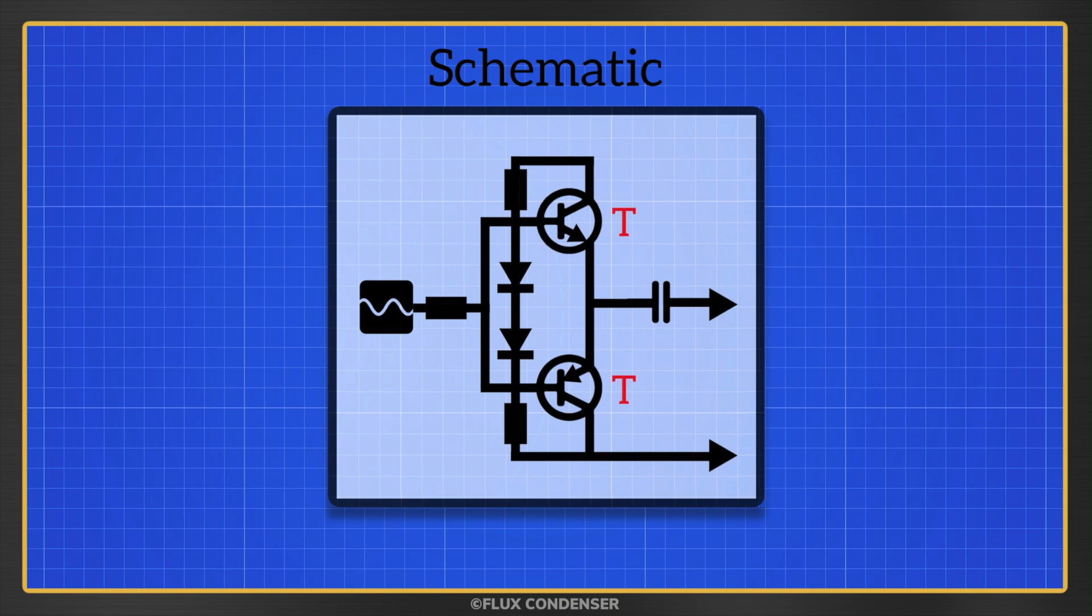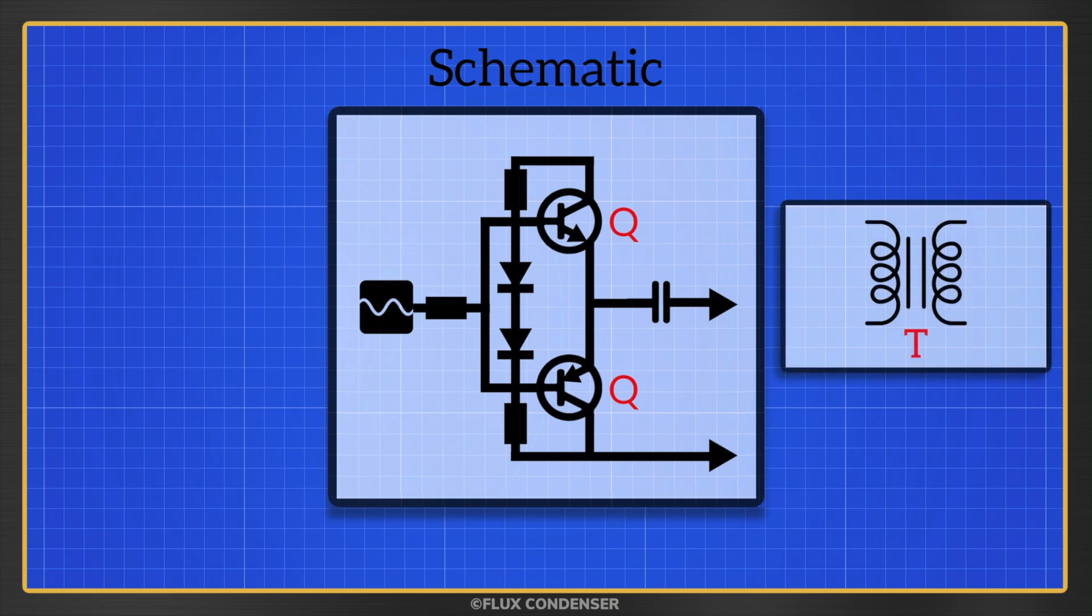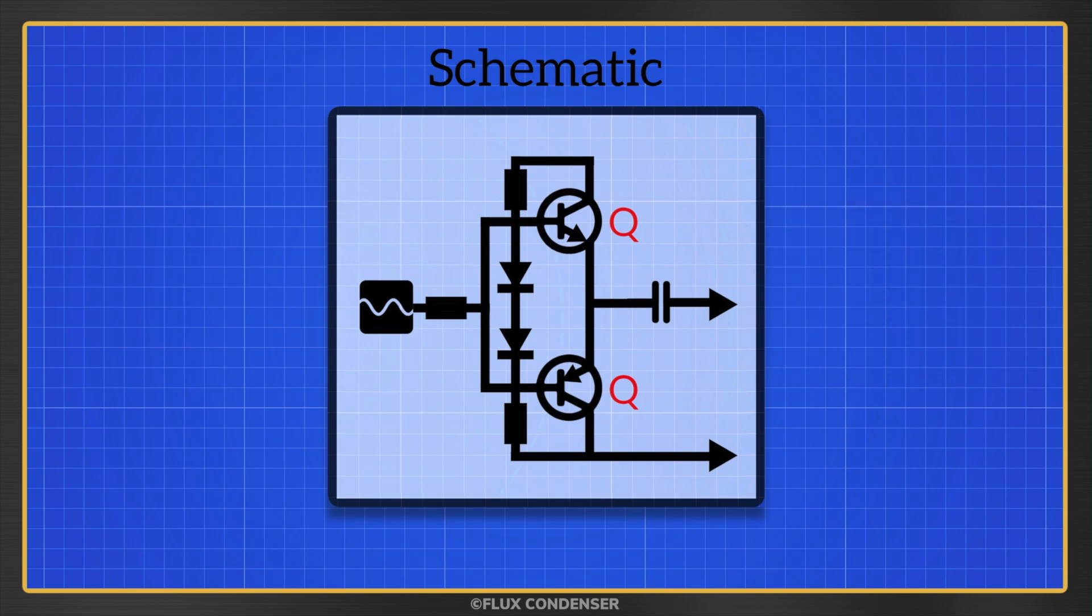Transistors, though, aren't represented by the letter T, but instead by a Q. Probably because by the time transistors were invented, the letter was already long taken by transformers. Why the letter Q, though? I actually have no idea. If you do, let me know in the comments. Something to do with the Q factor, maybe?